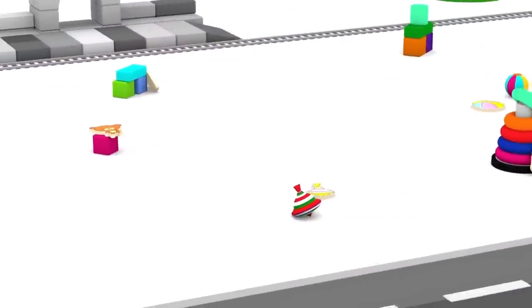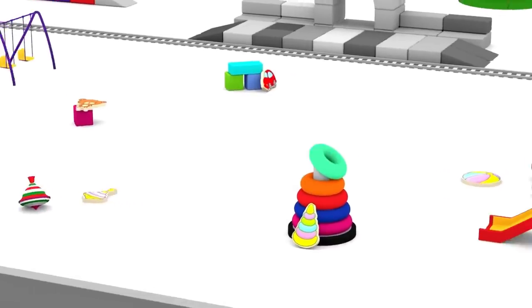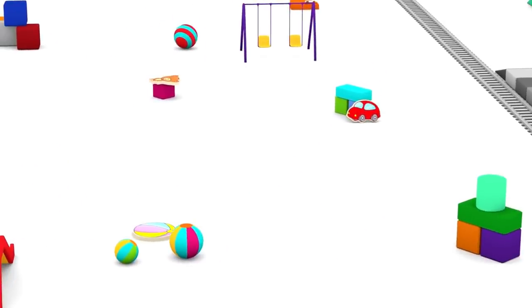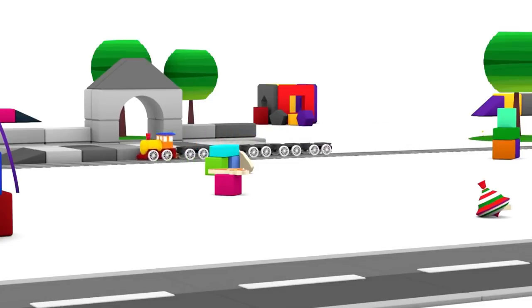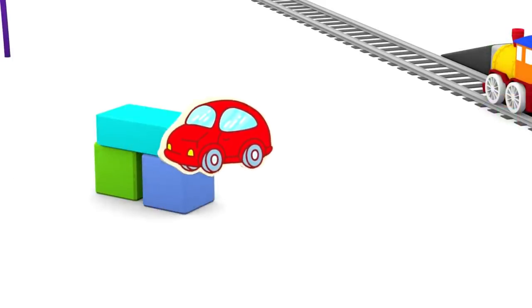Can you see a railway for trains? Yes, there it is. And here comes the magic train. The magic train collects picture puzzle pieces.